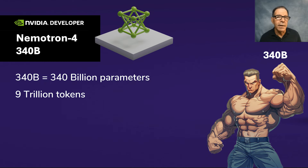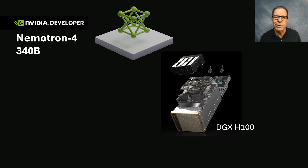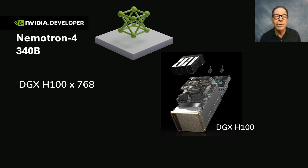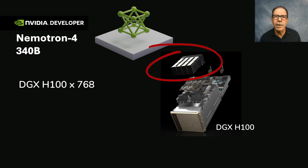It was built on 9 trillion tokens. Naturally, the base model was trained on DGX100 nodes — 768 of them — with each node consisting of 8 H100s. That's about 350 million dollars worth of hardware, by the way.